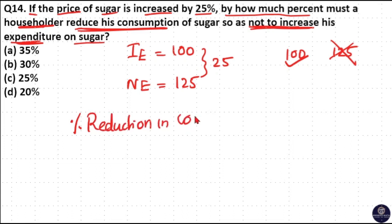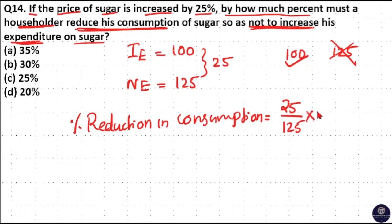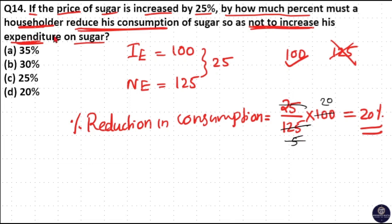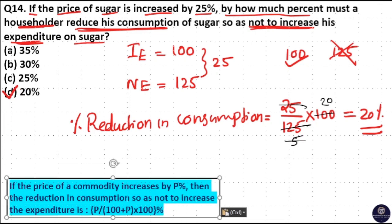The percentage reduction in consumption: 25 rupees has to be cut from 125 rupees to keep the initial expenditure. Percentage reduction = 25/125 × 100. Here 25 goes 5 times in 125, and 5 goes 20 times in 100, giving 20%. So this householder needs to reduce consumption by 20%. Option D is your answer. If in doubt, use the formula: P / (100 + P) × 100.